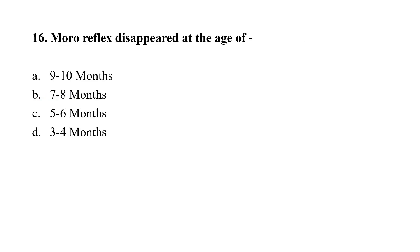Question number 16: Moro reflex disappears at the age of — option A: 9 to 10 months; option B: 7 to 8 months; option C: 5 to 6 months; option D: 3 to 4 months. The correct option is D, that is 3 to 4 months.